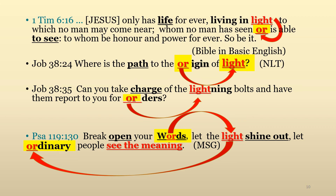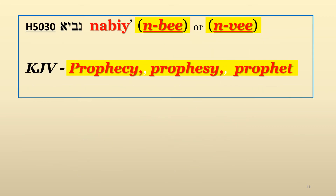Now, on to the second Hebrew word we want to cover in this video. The second Hebrew word is Strong's number 5030, pronounced Navi, which means prophecy, prophesy, or prophet.